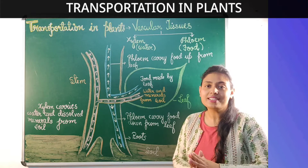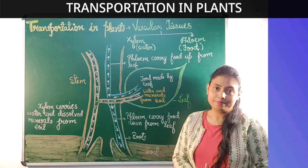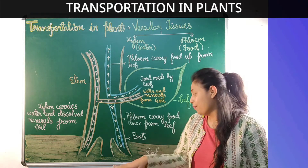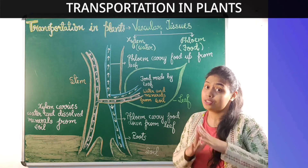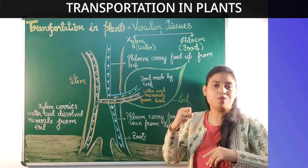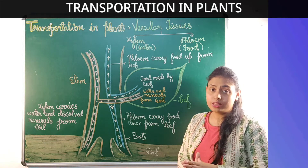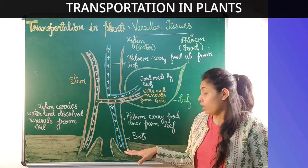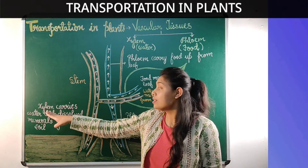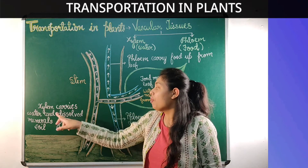Now let us study briefly how water from the soil reaches different parts of the plant. The main source of water for the plant is soil. Plants absorb water from the soil through roots — the part of the plant which remains in contact with the soil. The cells present in the roots absorb water from the soil, and this water gets transported into xylem vessels. The xylem tissue present in the root carries water and absorbed minerals from the soil.